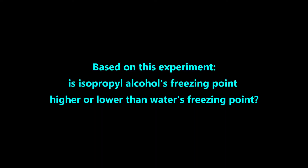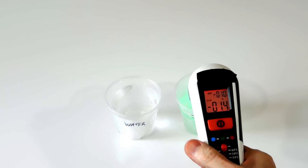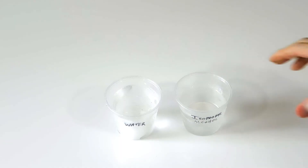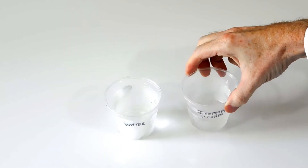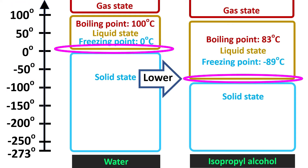Is isopropyl alcohol's freezing point higher or lower than water's freezing point? Since the isopropyl alcohol is still a liquid, even when its temperature is below zero degrees Celsius, its freezing point is lower than water's freezing point of zero degrees Celsius. Here is the diagram of both matters with their values written in. The freezing point for isopropyl alcohol is much lower than the freezing point of water, so it will only change to a solid state when its temperature reaches negative 89 degrees Celsius.